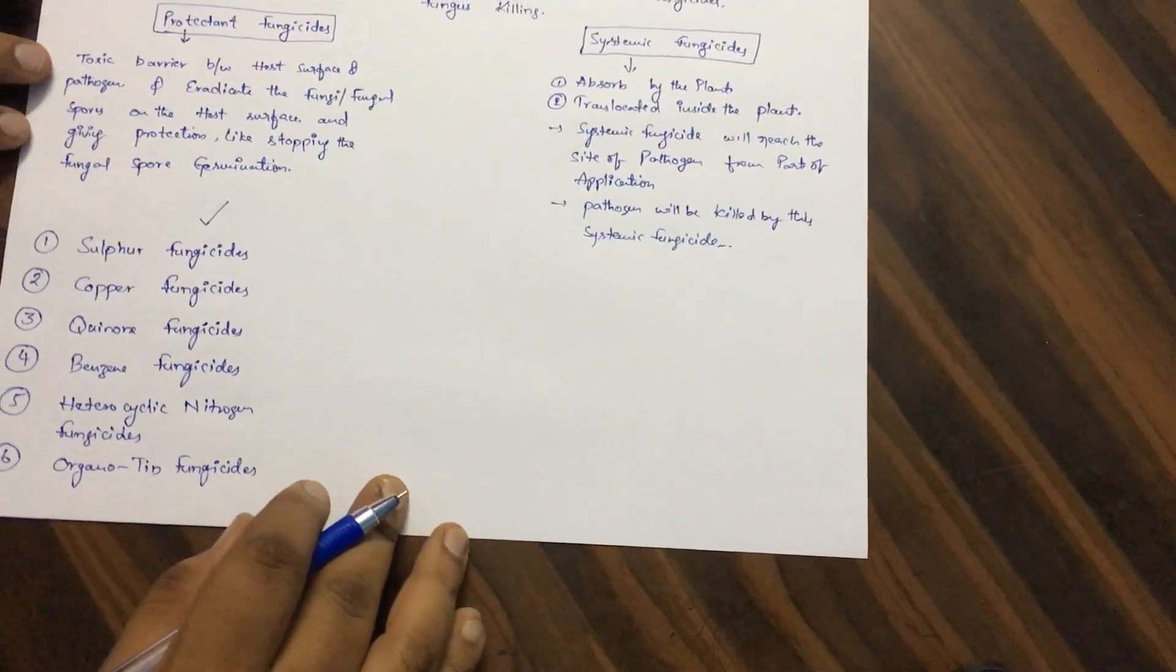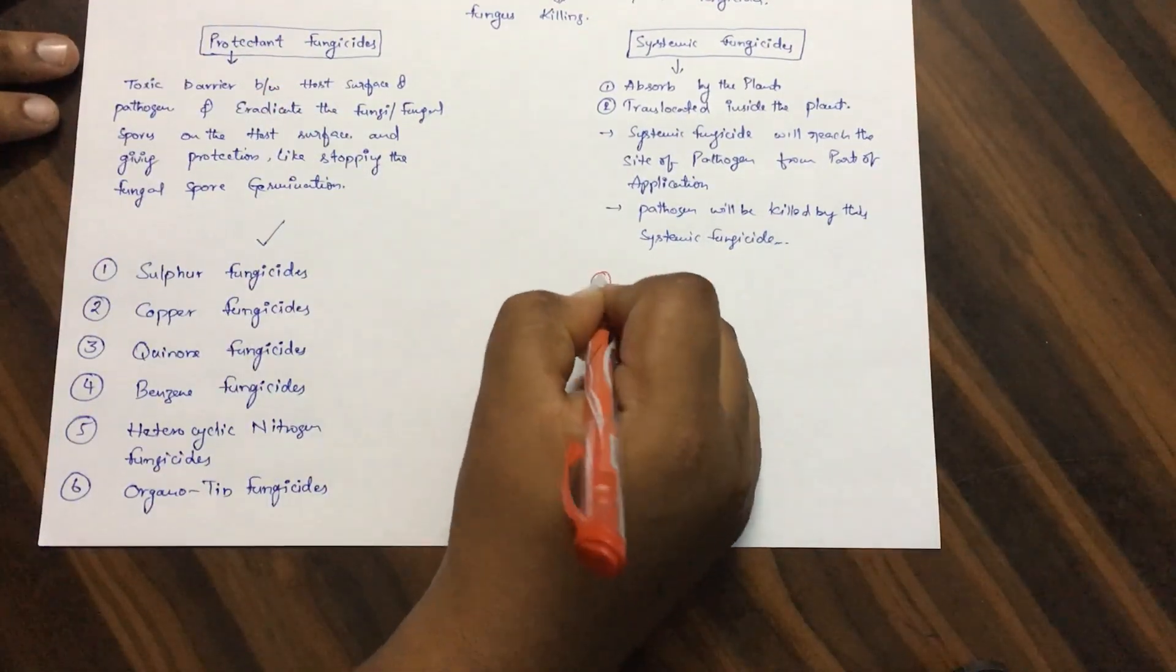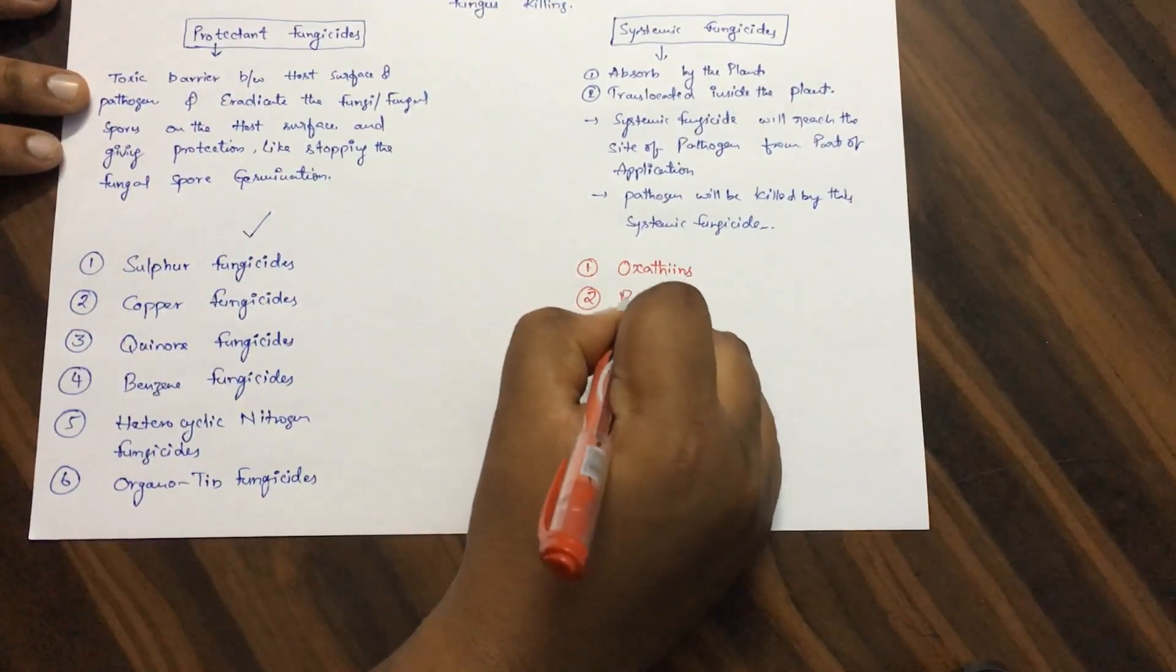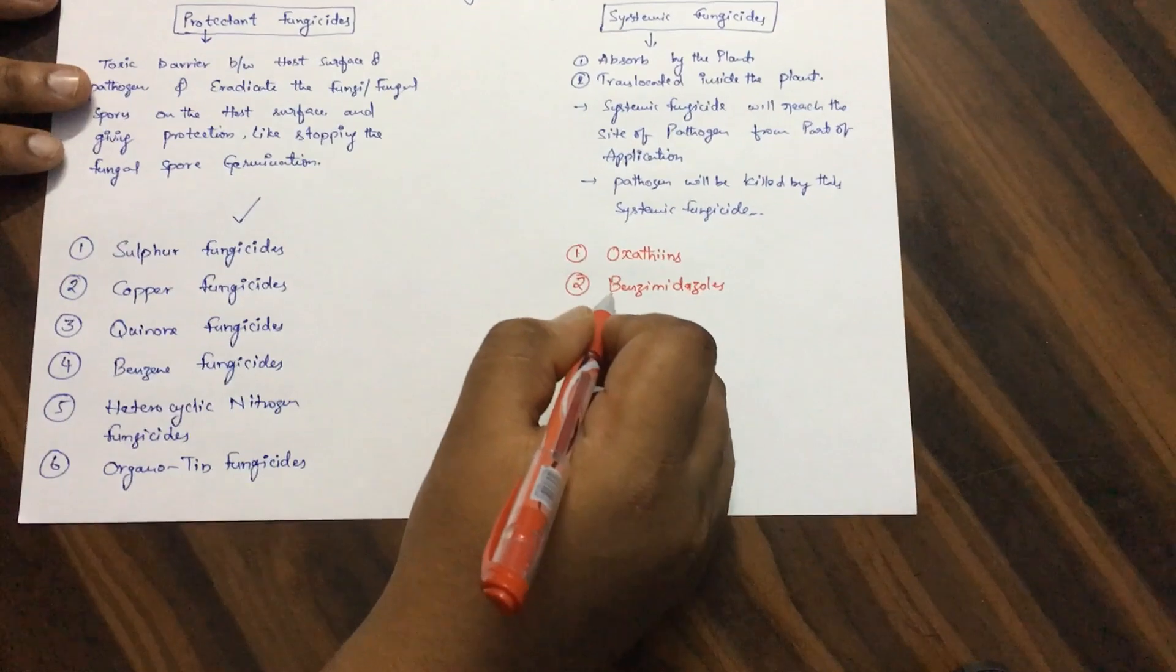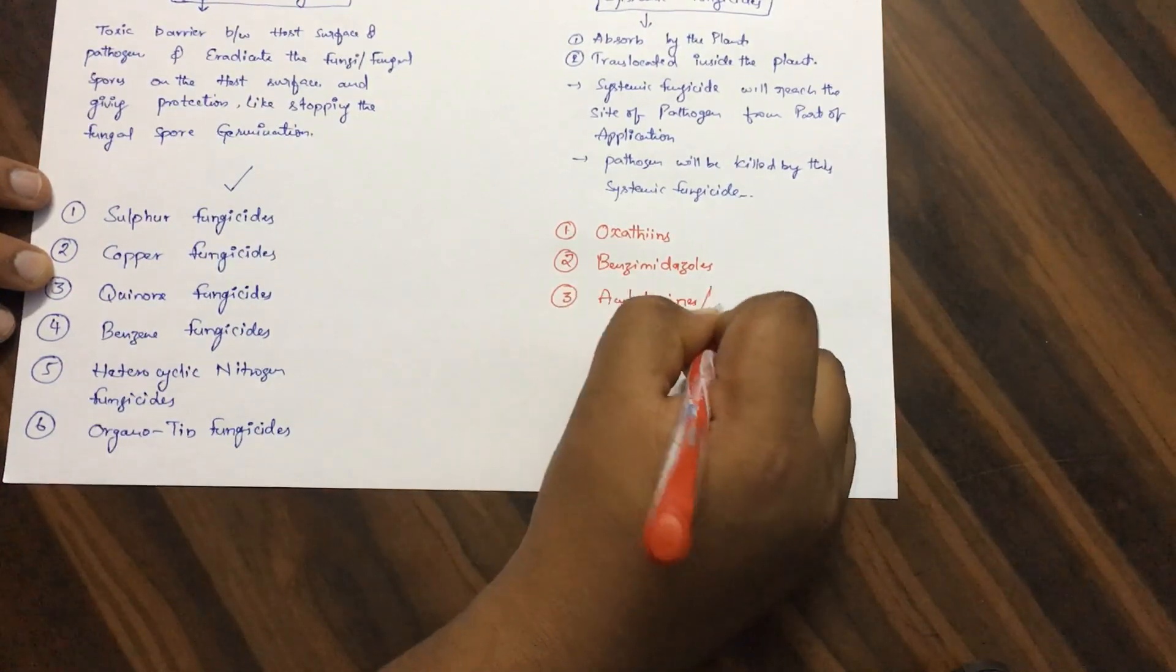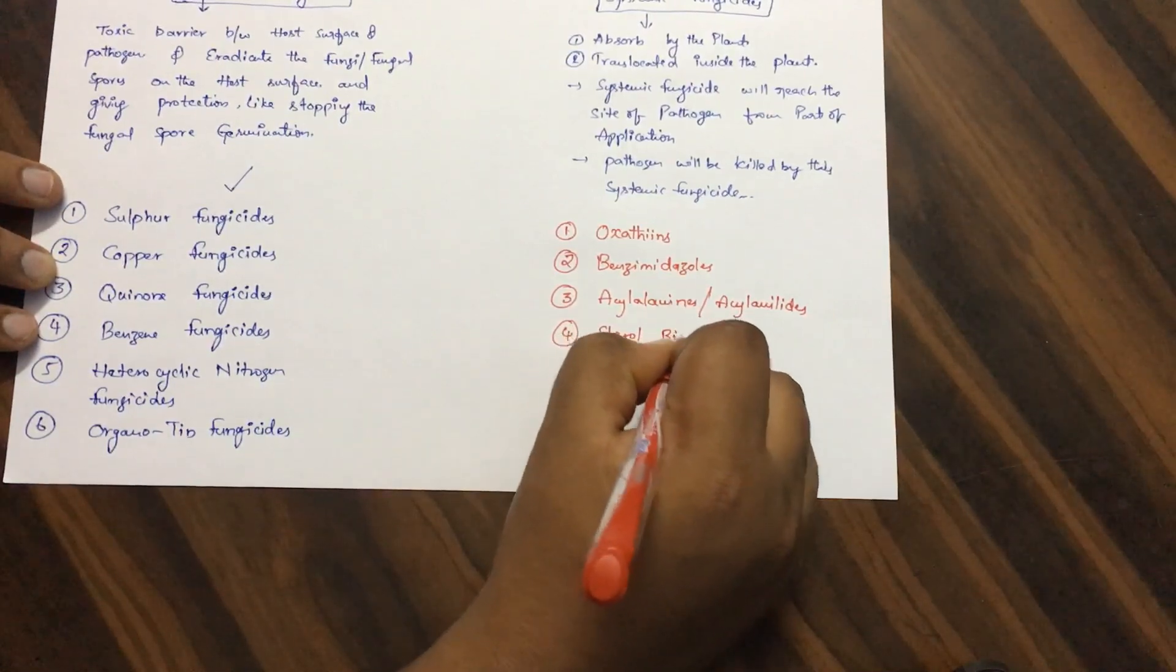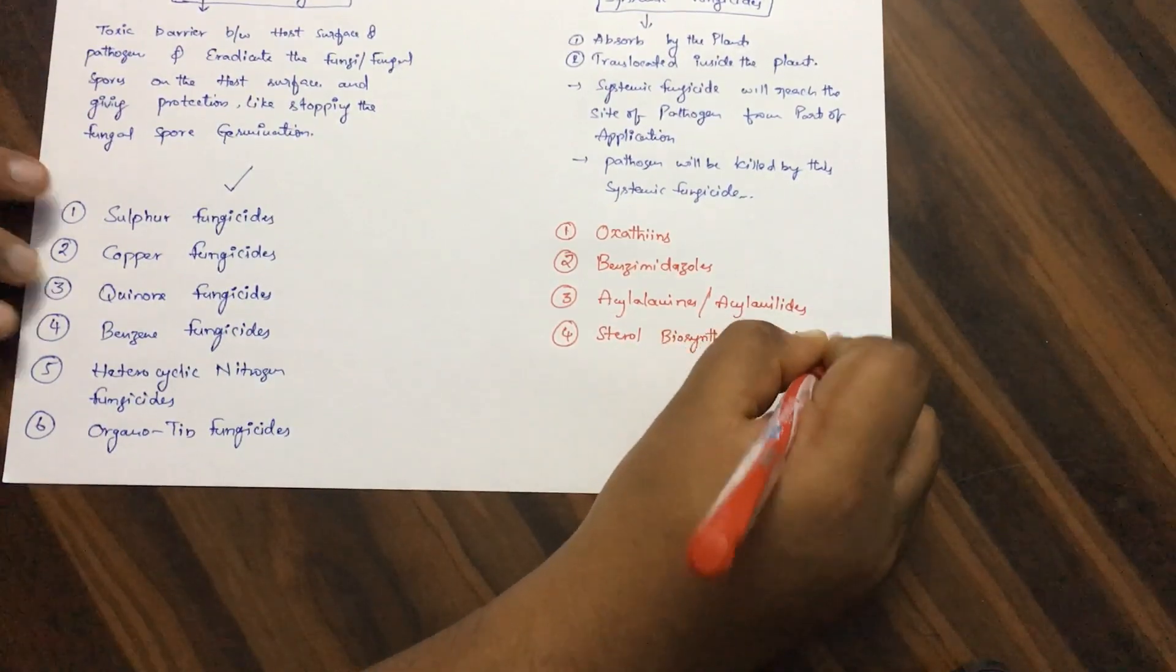And here also, the systemic fungicides are also again divided into benzimidazoles, acylalanines, sterol biosynthesis inhibitor fungicides, and organophosphates.